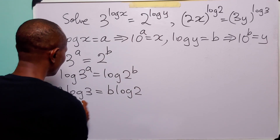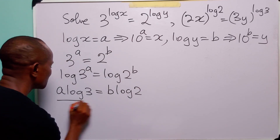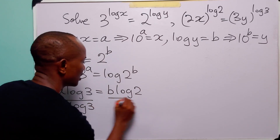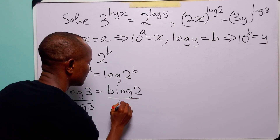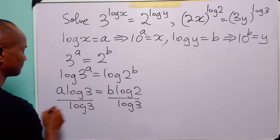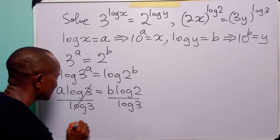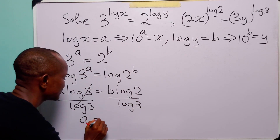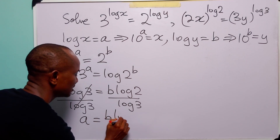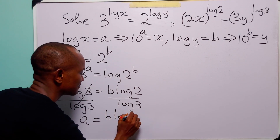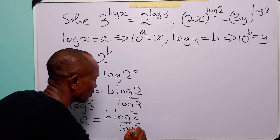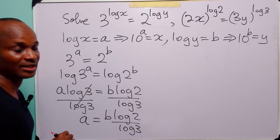Now if we divide both sides of this equation by log 3, we get that a is equal to b times log 2 divided by log 3.